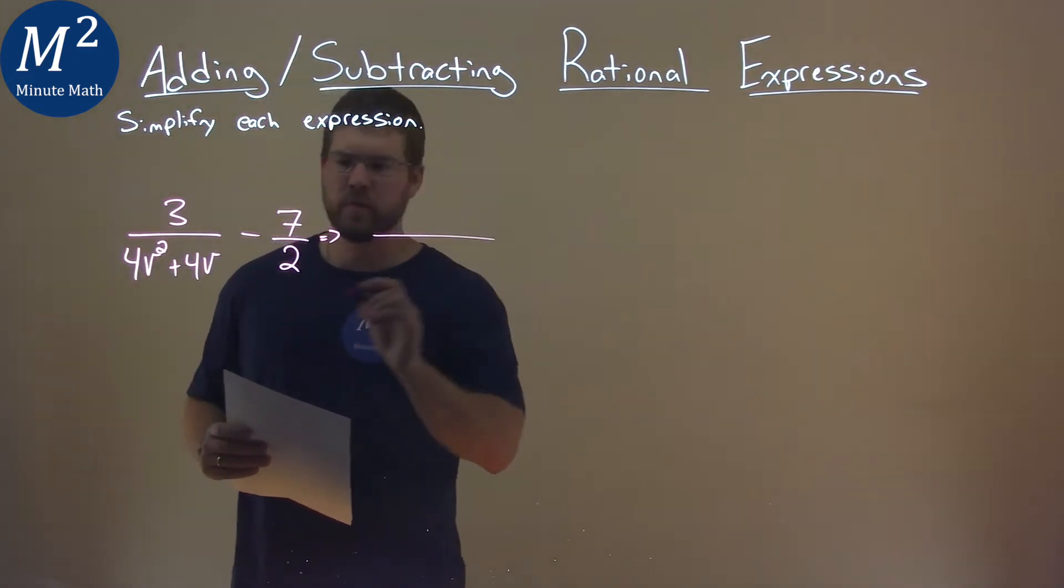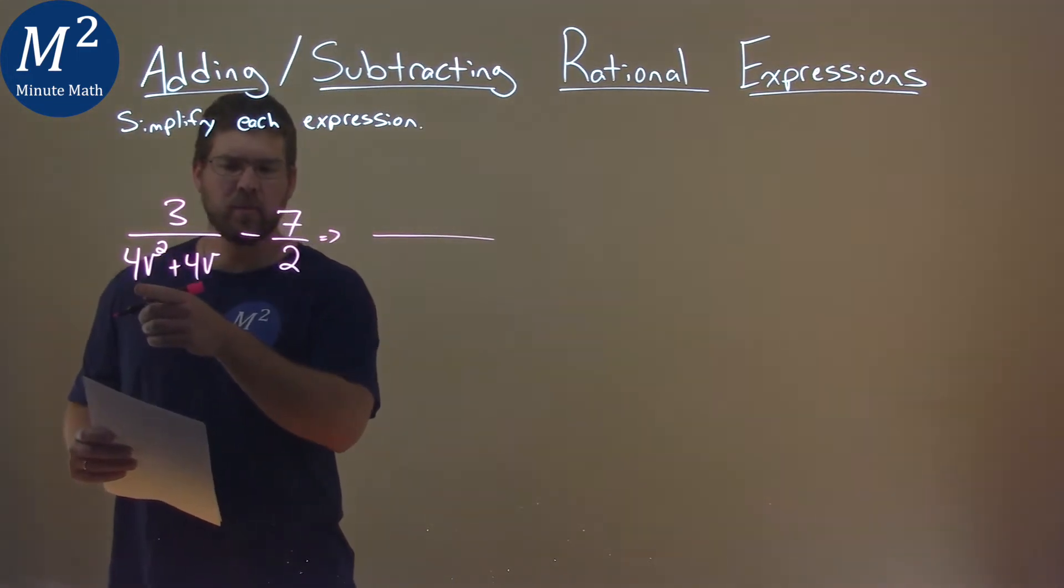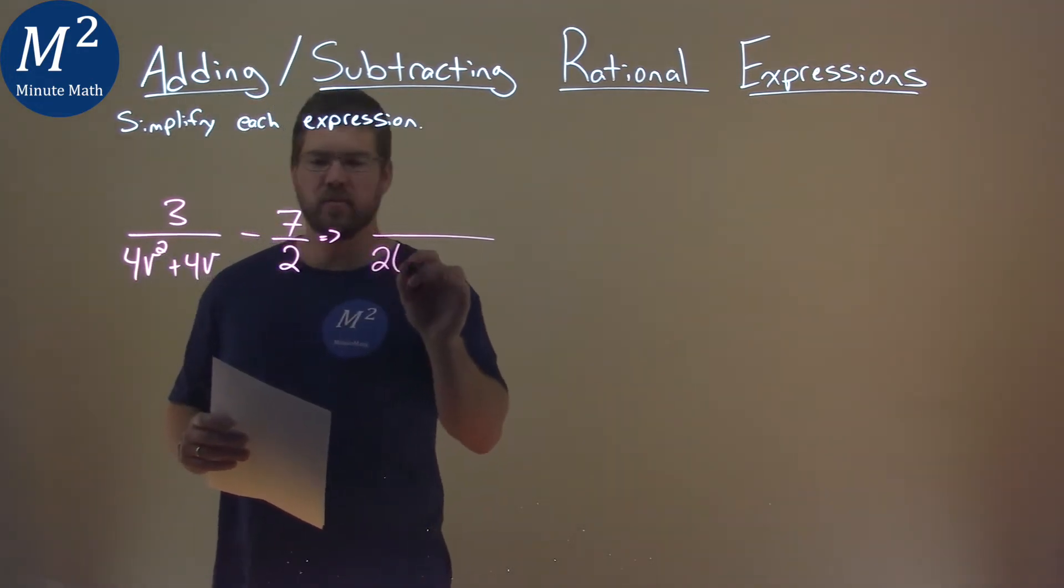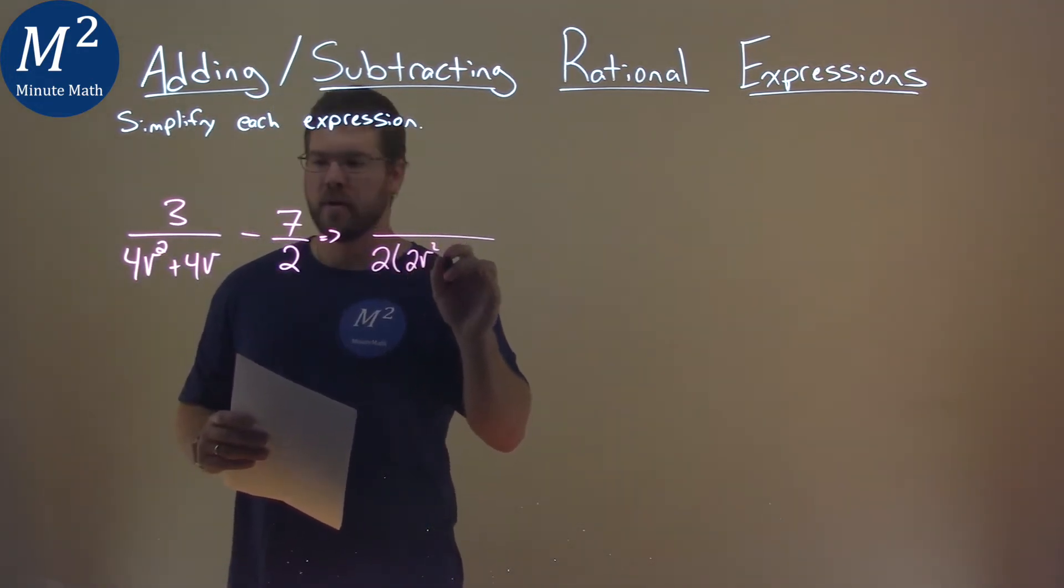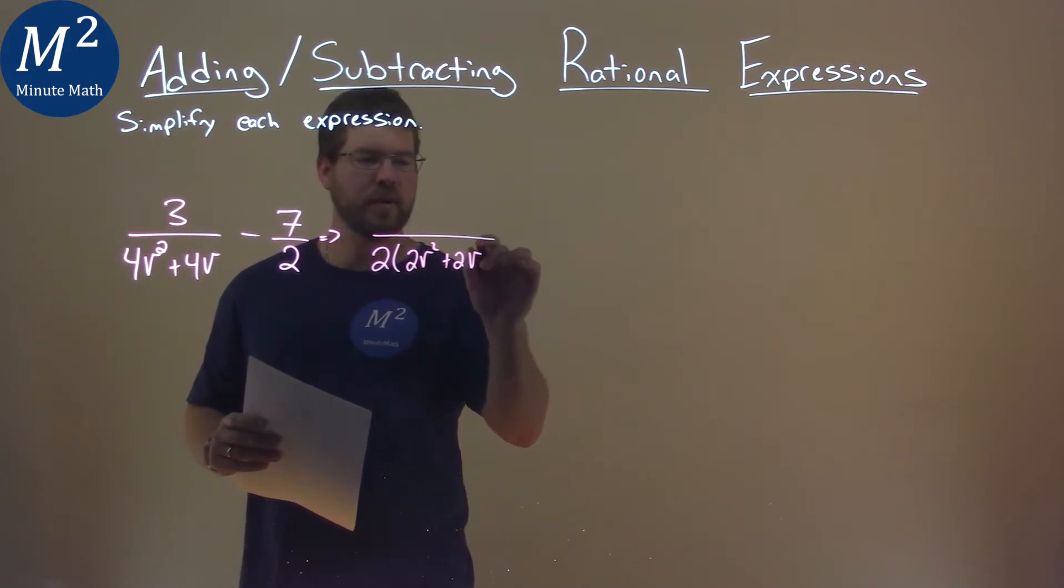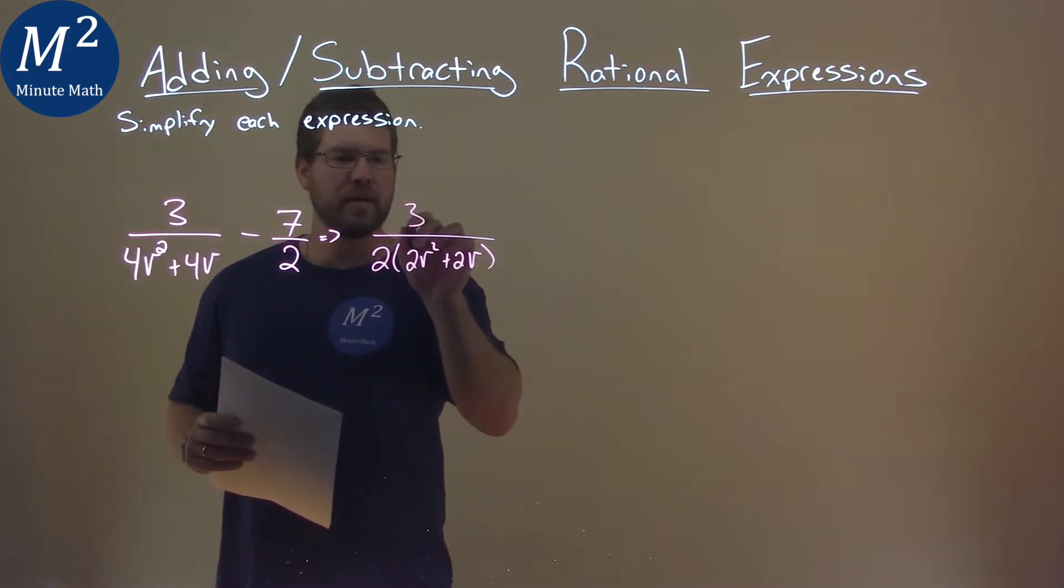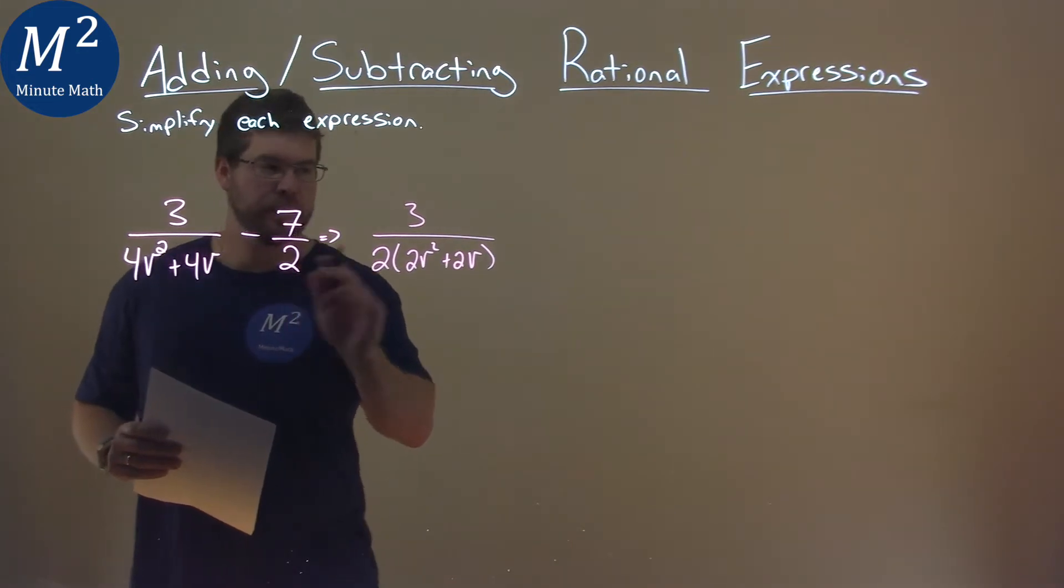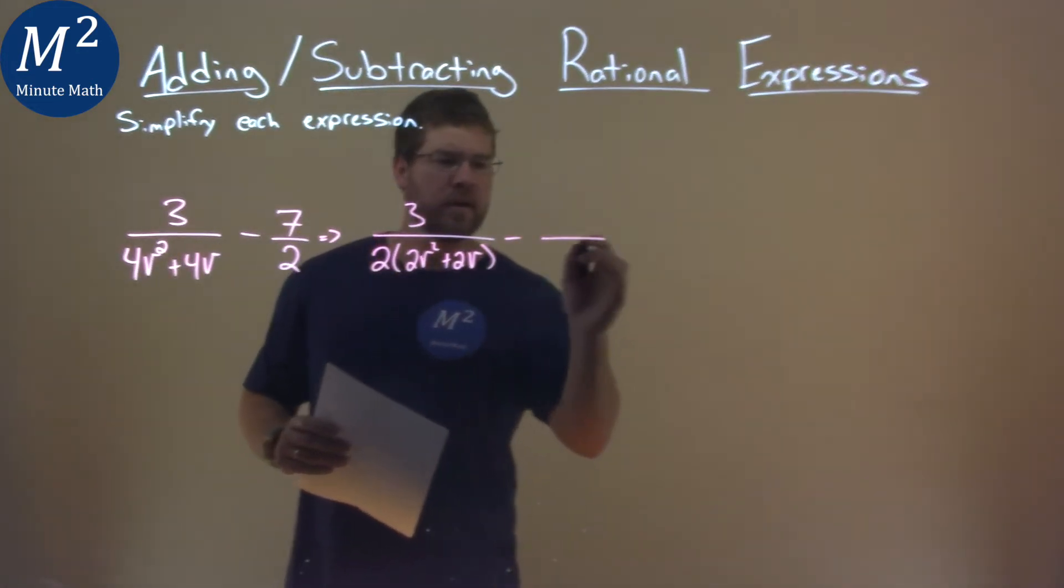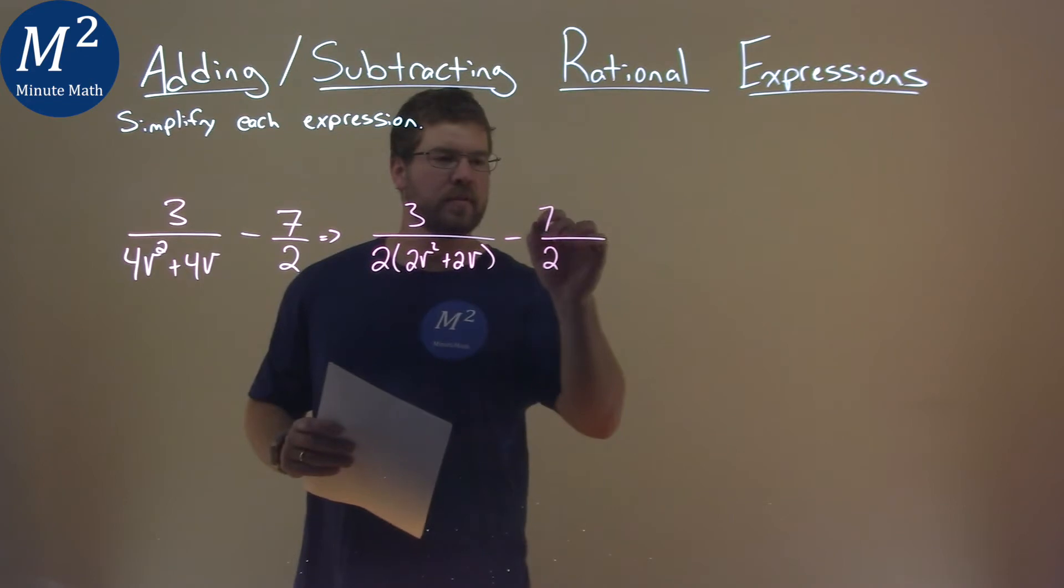What I'm going to do in this first part is I notice that if I pull out a 2 here from this denominator, I'm left with 2v² plus 2v. But I did that because I see there's a 2 in this denominator. So this denominator here is a 2, and then there's a 7.